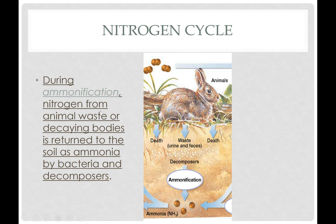Once you have your ammonia, you can have it from animal waste or decaying bodies. That ammonia gets returned to the soil by bacteria and decomposers. So this bunny here in the picture — if it were to die, the nitrogen in its body would be broken down by decomposers. If it released waste, the nitrogen in that would also be broken down by decomposers, and they're going to transform it into ammonia, NH3.